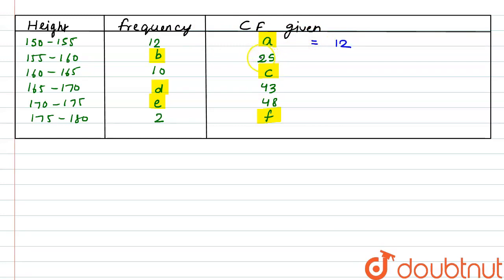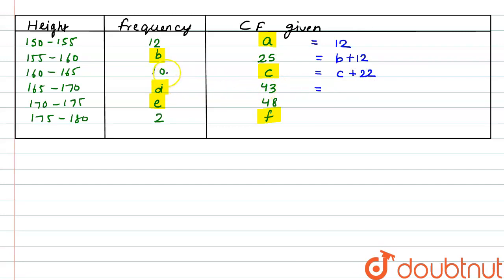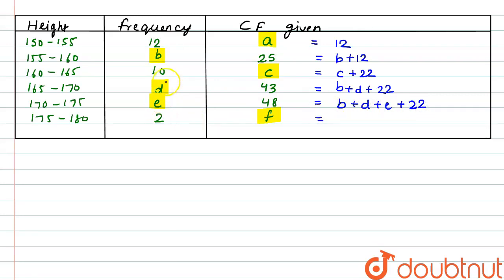The next cumulative frequency, 25, would be equal to the above two frequency values, that is 12 and B, so it would be B plus 12. The next entry C would be equal to 10 plus B plus 12, giving B plus 22. The next entry 43 would be B plus D plus 22. Similarly, 48 would be equal to B plus D plus E plus 22. And F would be equal to all the frequencies: B plus D plus E plus 24.